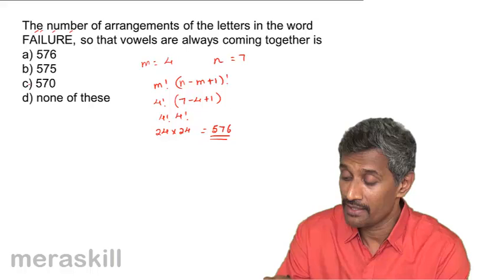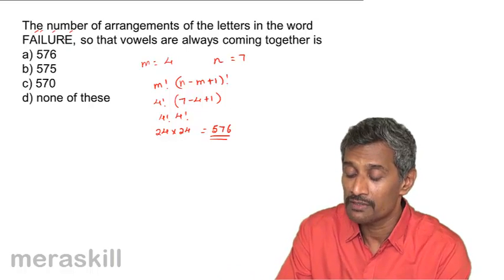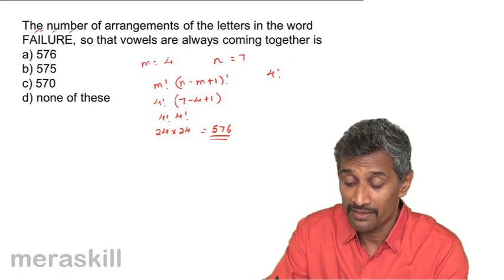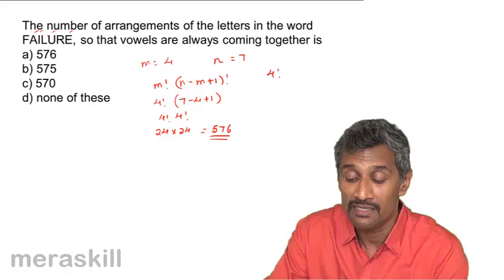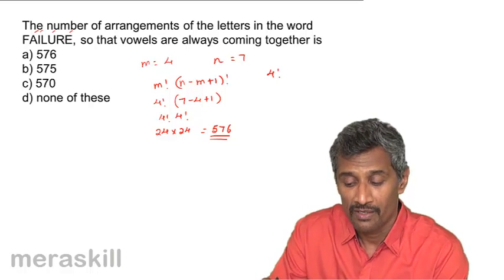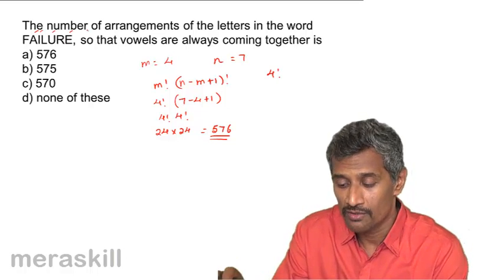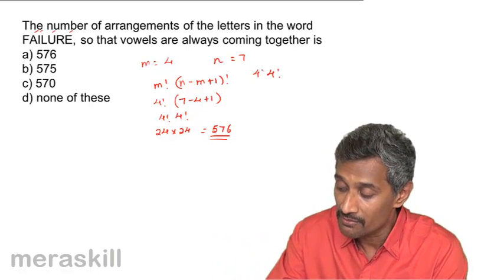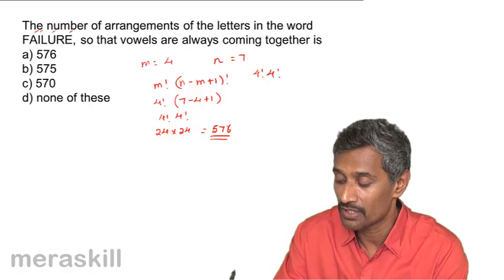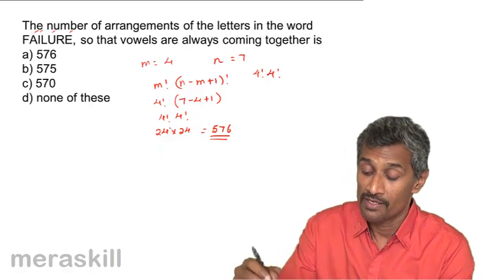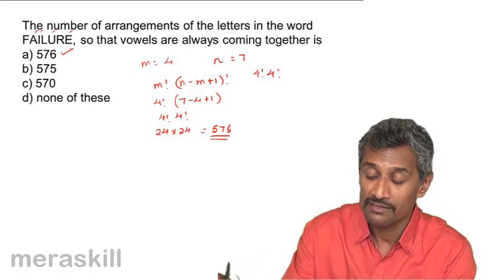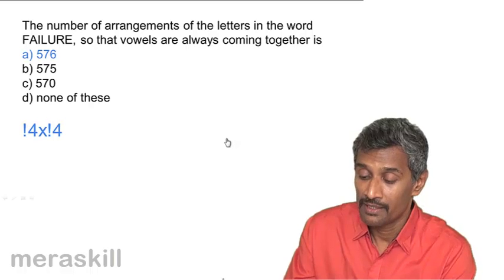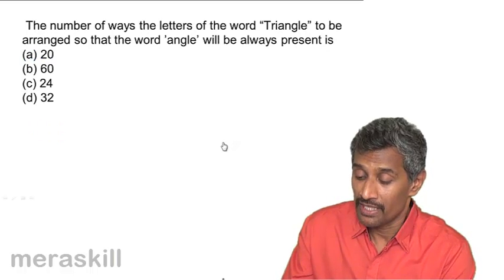Alternatively, if you take all the vowels together they can arrange among themselves in four factorial ways, and this vowel group plus the remaining three consonants makes four items total, which can be arranged in four factorial ways at the gross level. So it's four factorial into four factorial, which also gives 576 as the answer.